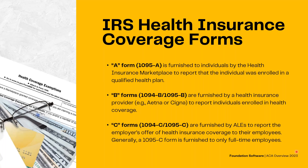A quick overview of the ACA forms. There is the A form, which is furnished to individuals by the health insurance marketplace to report that the individual was enrolled in a qualified health plan. And then there's the B form, which is furnished by a health insurance provider, such as Aetna or Cigna, to report individuals that are enrolled in their health coverage.